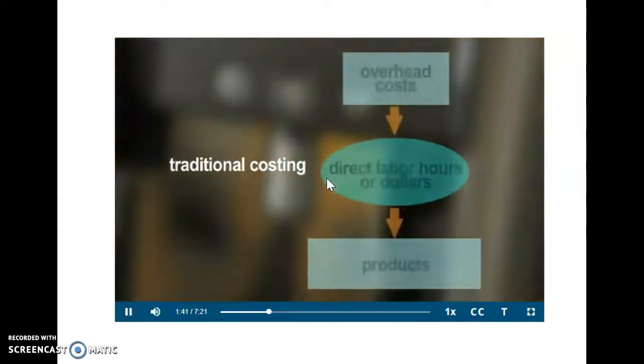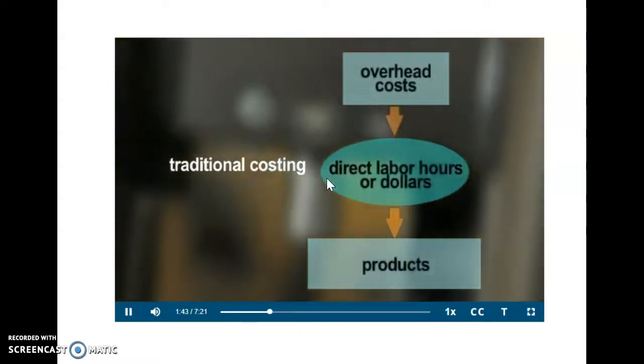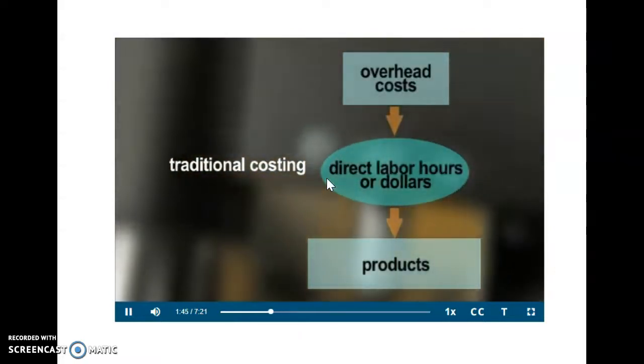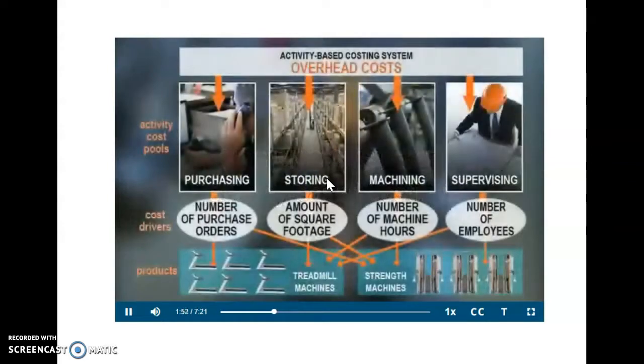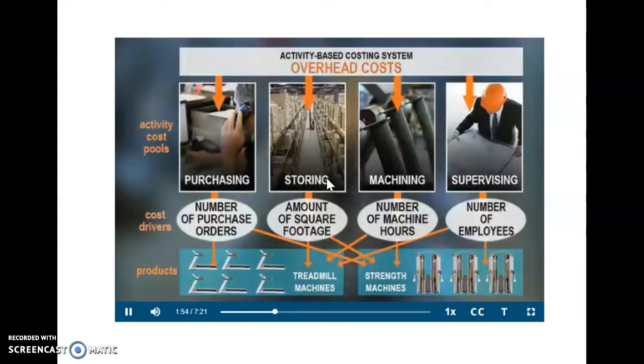Traditional methods were simple to implement, but not always accurate, so activity-based costing gained in popularity. This method offered increased accuracy, allocating overhead to identified activity cost pools, and assigning costs to products using related cost drivers that measure the activities or resources consumed.